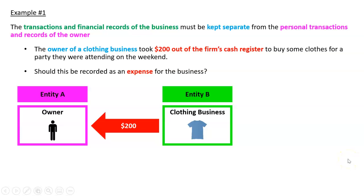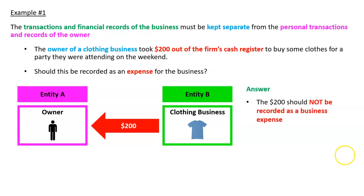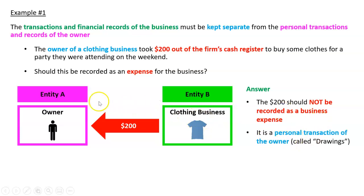Should this be recorded as an expense for the business? Clearly it shouldn't. It's not recorded as a business expense, but something still needs to be recorded about it. The owner can take out money if they want, but it is not a business expense — it is a personal transaction of the owner. It's separate. We give that a name, which we'll cover in the next chapter: drawings. That is the owner taking out drawings, which is actually different from a business expense.